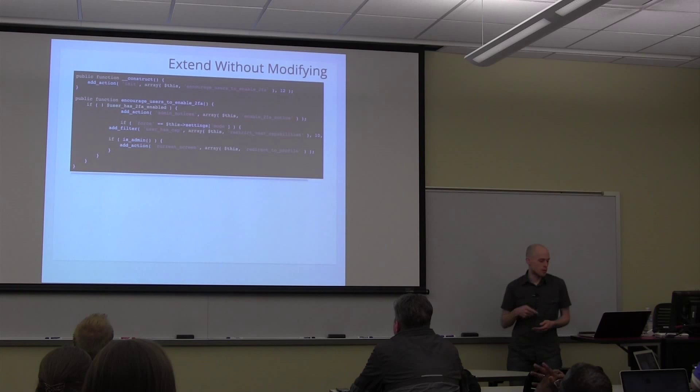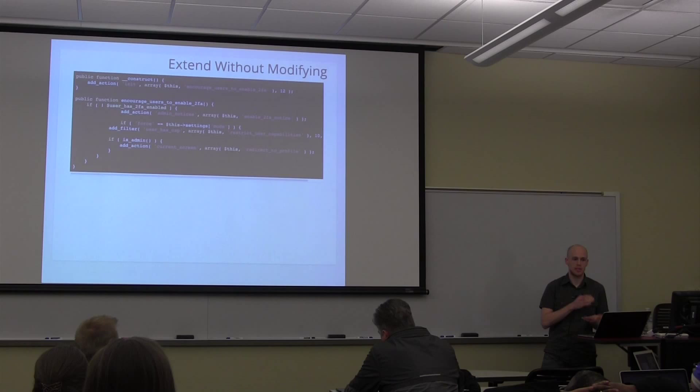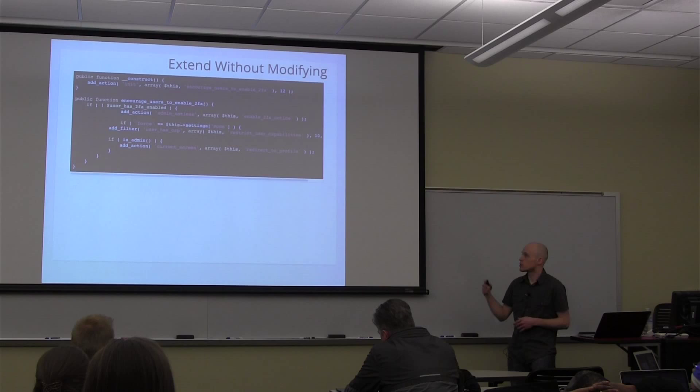This is the core of what it does. It hooks into the init hook and checks if they have it enabled. If they don't, it adds the admin notice. If it's in force mode, it puts them back to a subscriber capability and redirects them to the profile. It's really simple — just a separate plugin. It doesn't actually touch the Google Authenticator plugin.